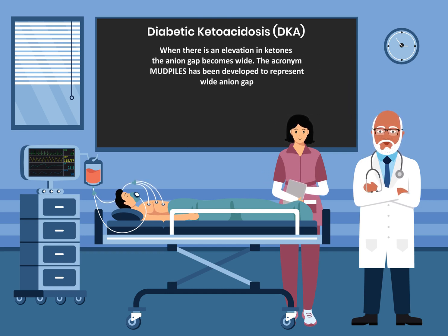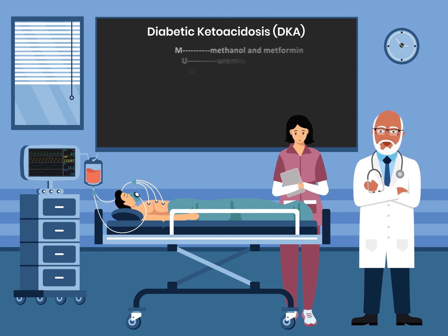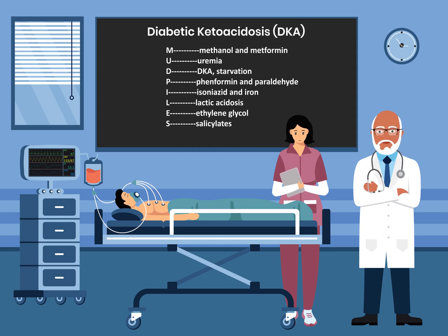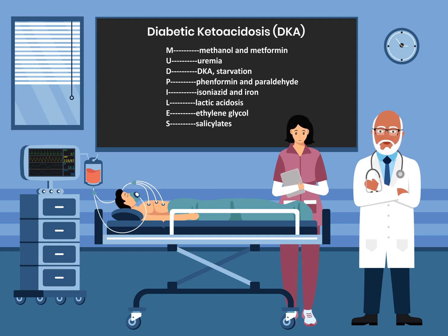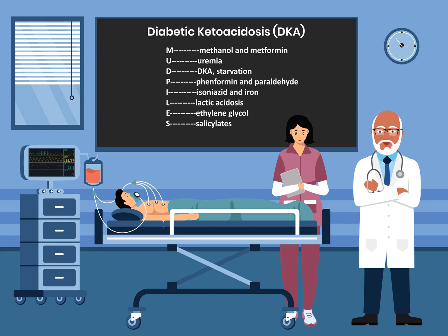The acronym MUDPILES has been developed to represent wide anion gap. M represents methanol and metformin. U represents urea. D represents DKA and starvation. P represents phenformin and pyraldehyde. I represents isoniazid and iron. L represents lactic acidosis. E represents ethylene glycol. And S represents salicylates.